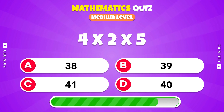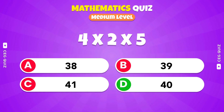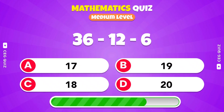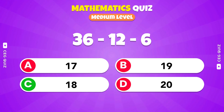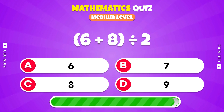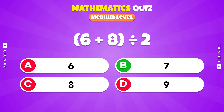Multiply 4 times 2 times 5. You're right, it's 40. What is 36 minus 12 minus 6? 18. Calculate 6 plus 8 divided by 2. The answer is 7.